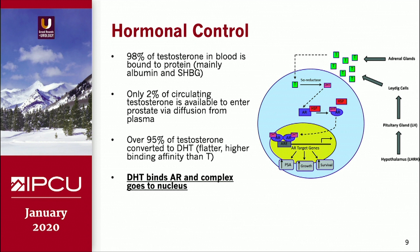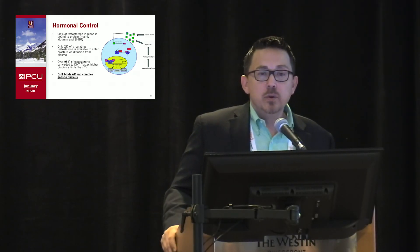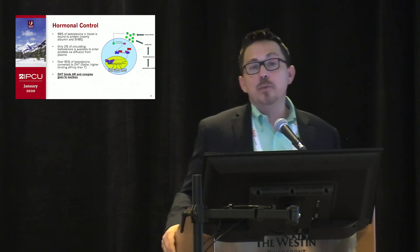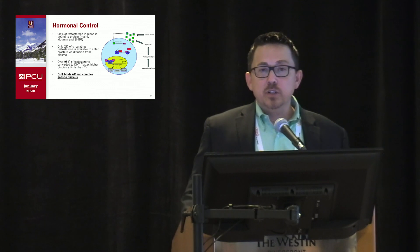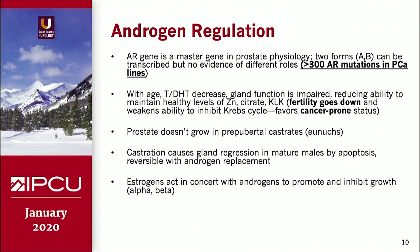Zinc temporarily inactivates the kallikreins. The major zinc transporter is actually decreased or absent in prostate cancer compared to other tissue, so it is hypothesized to be a tumor suppressor. In terms of hormonal control of the prostate — relevant to inflammation and disease pathways — the overwhelming majority of testosterone is bound to protein in the blood. The bond with albumin is weak and can break; less so with SHBG. A very small percentage is free and can diffuse into the prostate, where the majority is converted to DHT.